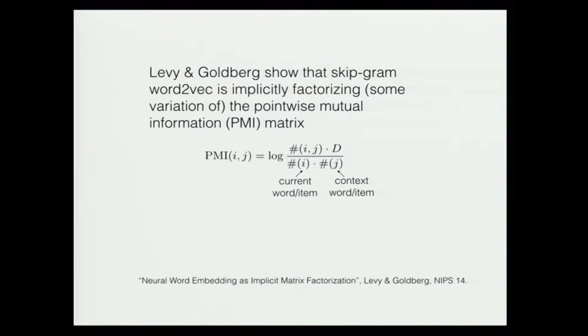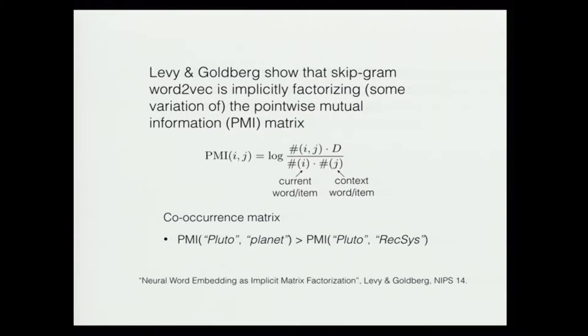Here is how the PMI matrix is calculated. The high-level idea is that this is basically a co-occurrence matrix. Going back to our NLP example, under this formulation, the PMI between "Pluto" and "planet" will be much larger than the PMI between "Pluto" and, say, "rexus," given a reasonable corpus.